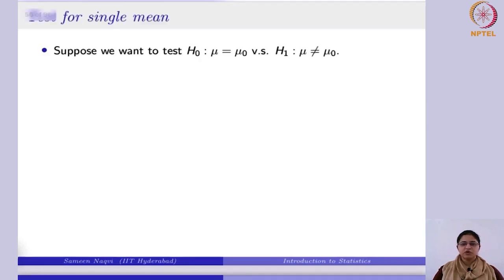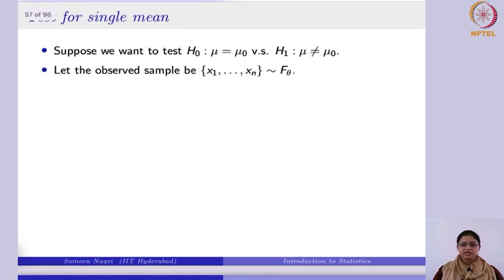In such a case, if you are still interested in finding the mean and you want to conduct a two-tailed test — whether the population mean is not equal to the hypothesized value — then you will first be taking a random sample from this distribution. Suppose it is Poisson, or it might be exponential, or any other distribution. From these you take the random sample.